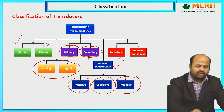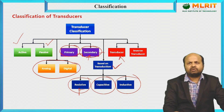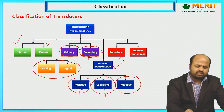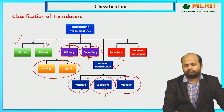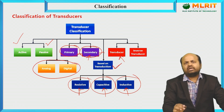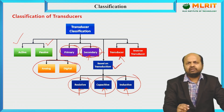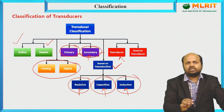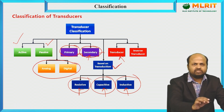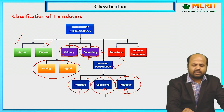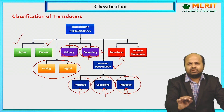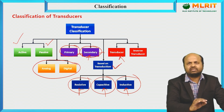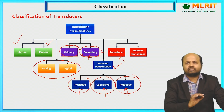For resistive type, you can have the potentiometer for displacement measurement. For capacitive type, the example is a microphone. For inductive type, the example is LVDT — Linear Variable Differential Transformer — for displacement measurement. So these are the classifications: active, passive, primary, secondary, transducer, inverse transducer, analog, digital, resistive, capacitive, and inductive.